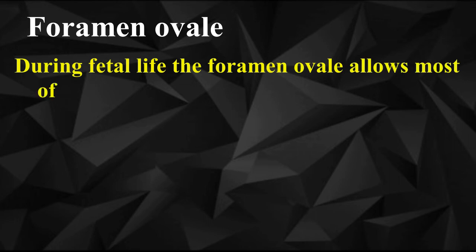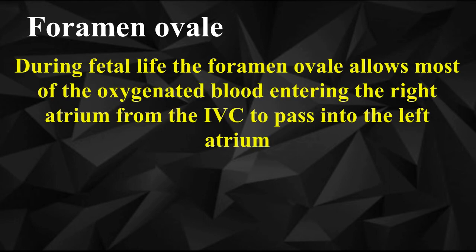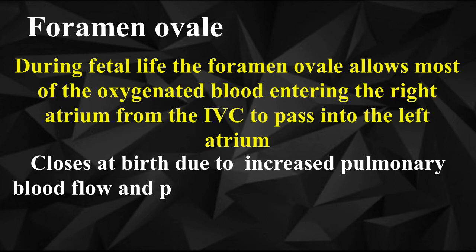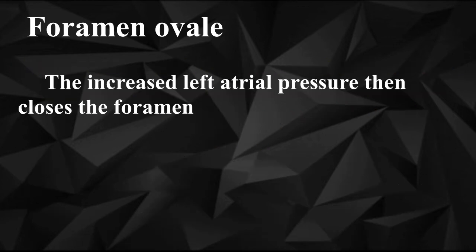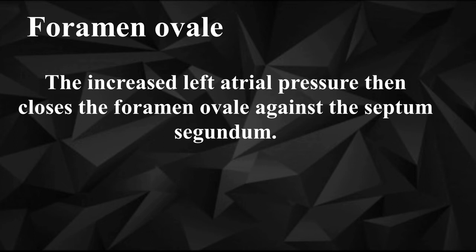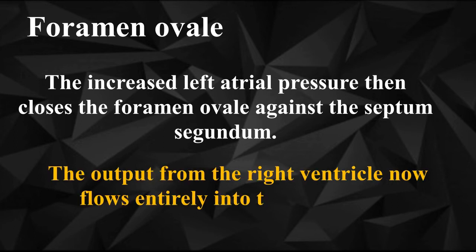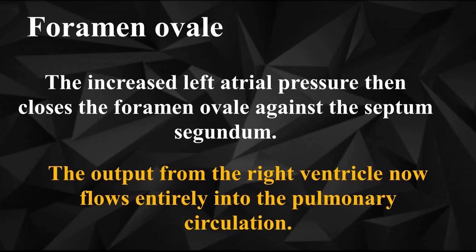Shunts at birth. 4. Foramen ovale: During fetal life the foramen ovale allows most of the oxygenated blood entering the right atrium from the IVC to pass into the left atrium. It closes at birth due to increased pulmonary blood flow and pulmonary venous return to the left heart, causing the pressure in the left atrium to be higher than in the right atrium. The increased left atrial pressure then closes the foramen ovale against the septum secundum.